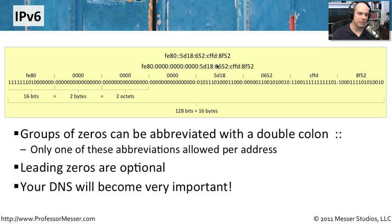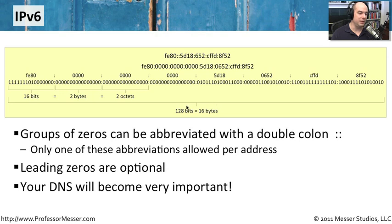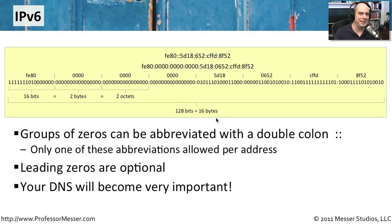If there are leading zeros in front of numbers, you can drop them, which helps a little. Written out in binary, you can see all 128 bits — that's 16 bytes — for a single IPv6 address. As you can imagine, typing an IPv6 address for a web server or email server isn't going to be easy. So domain name services are going to be extremely important when we move to IPv6.